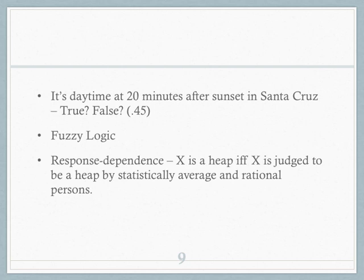Maybe we could just say it depends on what people would consider — would people say it's a heap? If we had 'heap judges' or took a very average rational person, would they say it's a heap? That would give us an answer for borderline cases. But then that makes reality much more about ourselves and our subjective perceptions and judgments, rather than facts about the world — not facts about our perception of the world. Okay, so that's the sorites paradox.